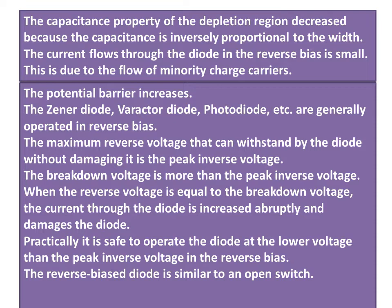The current that flows through the diode in reverse bias is small. This is due to the flow of minority charge carriers. The potential barrier increases.